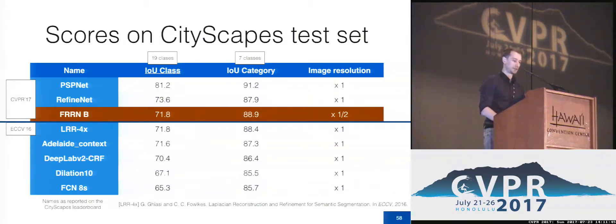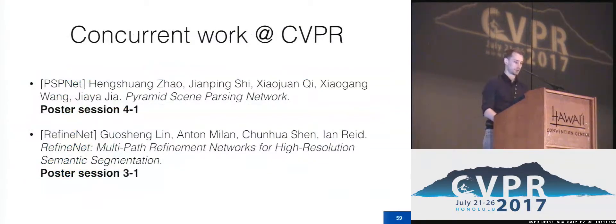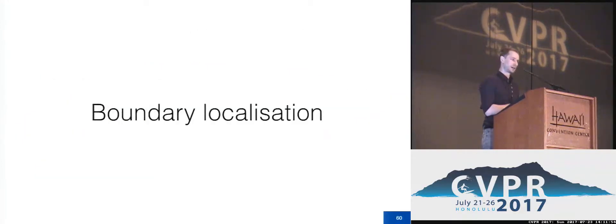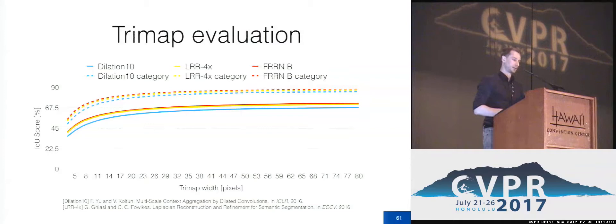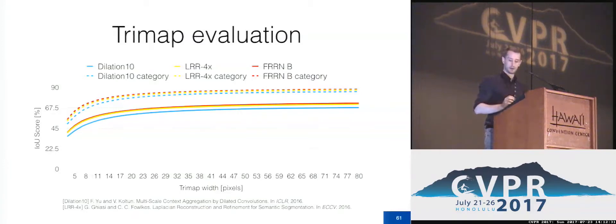There are also two other papers here at CVPR presented at Poster Sessions 3 and 4, so check them out as well. We also wanted to quantitatively score performance around boundaries, since the normal IOU score used on the leaderboard doesn't penalize bad boundary performance. We performed a trimap evaluation, where you only evaluate predictions at pixels close to boundaries. The x-axis shows the trimap width — the maximum radius from a boundary considered — and the y-axis shows IOU score. We outperform all other approaches, including the Laplacian pyramid approach LRR-4X, which uses a pre-trained network specifically geared to predicting high-resolution segmentation masks.